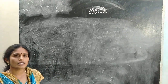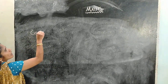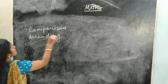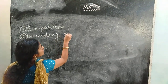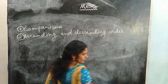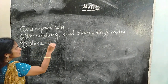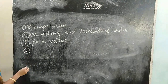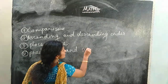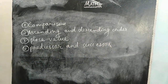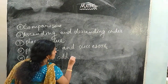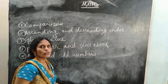In today's class we learned about numbers, then comparison of numbers, ascending and descending order, place value, predecessor and successor, and even and odd numbers. I hope you all understood. Thank you.